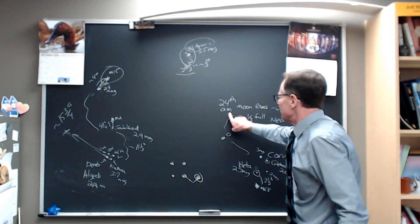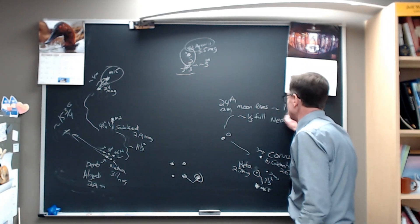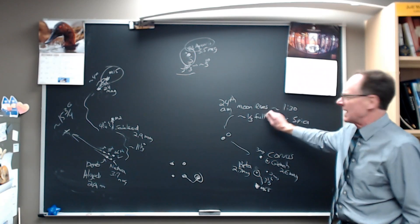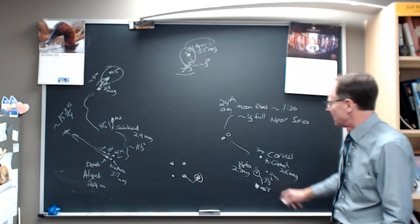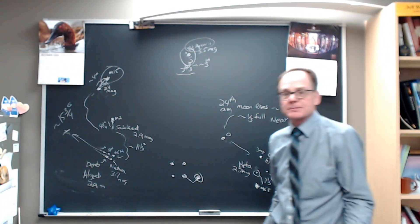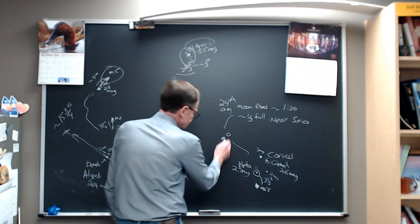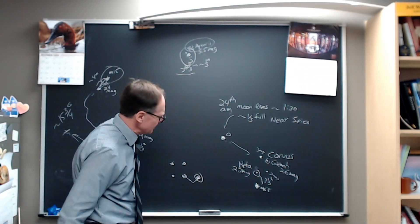On the 24th in the morning, so Monday night into Tuesday morning, about 1:30, 1:45 in the morning, the moon's going to rise. The moon's a beautiful moon, about one-third full, and it's sitting near the bright star Spica. So you'll see Spica sitting down below the moon there, a real bright star in Virgo.